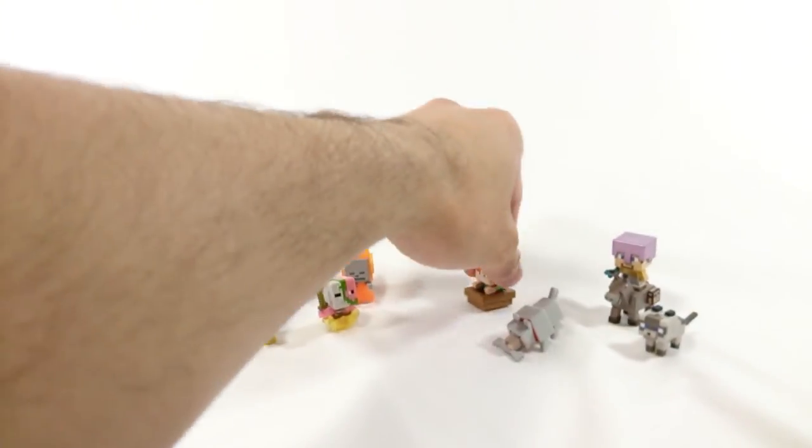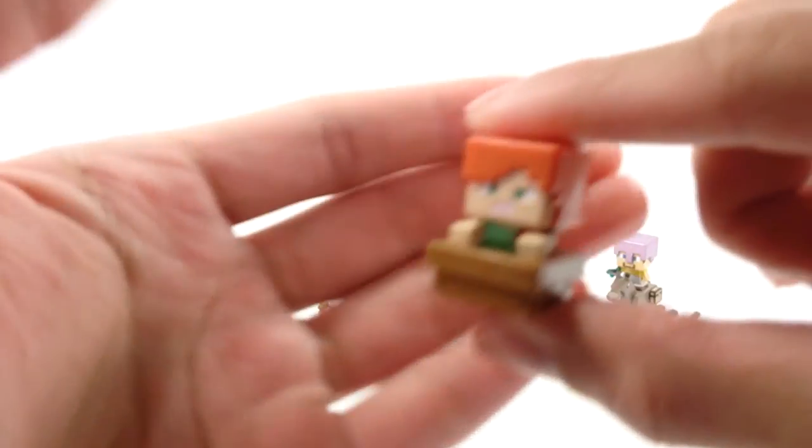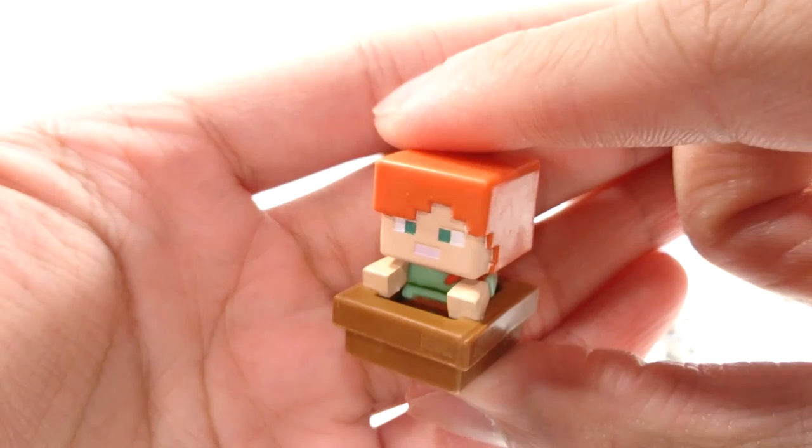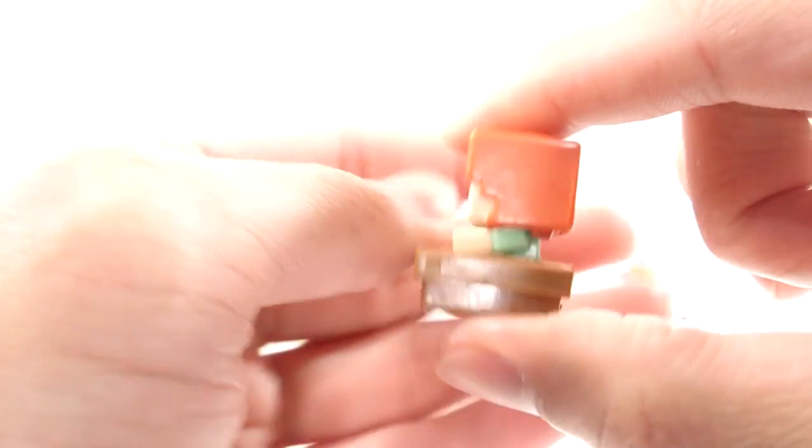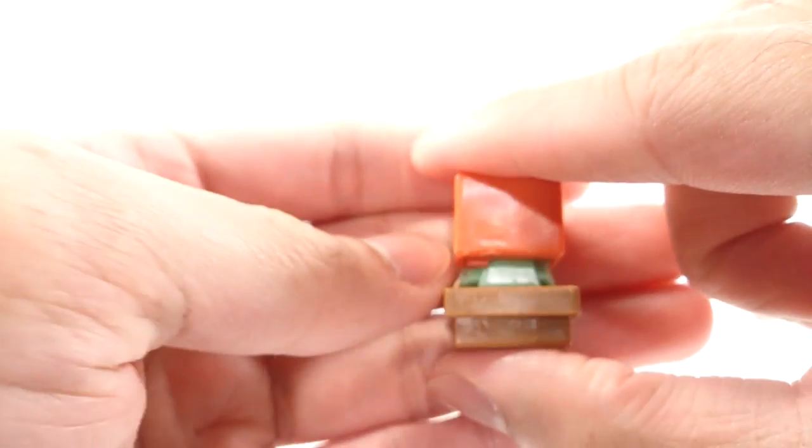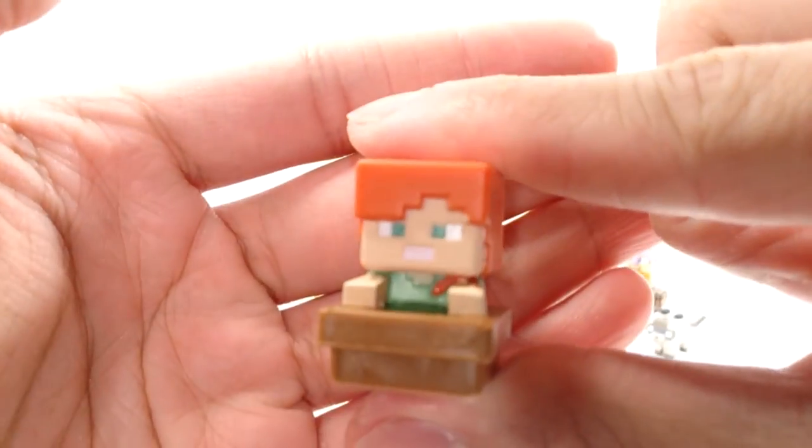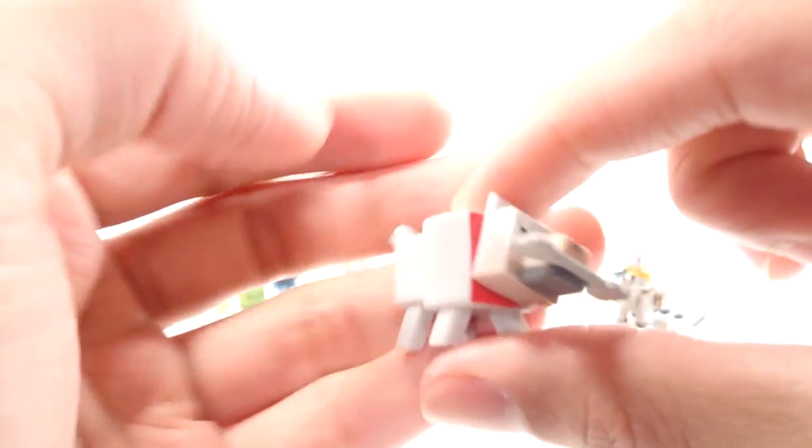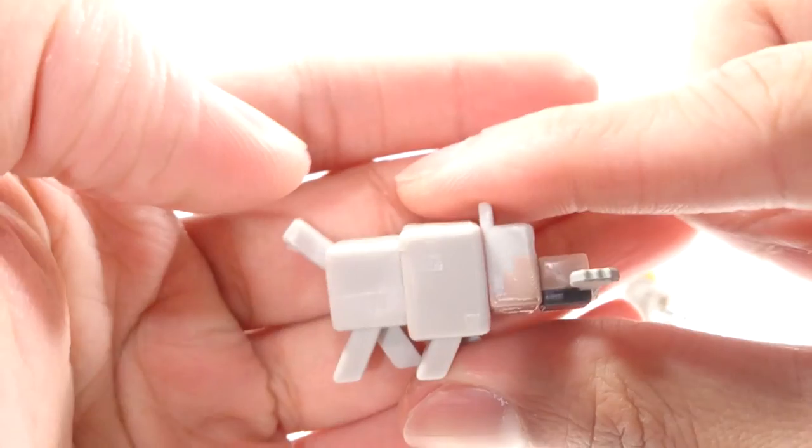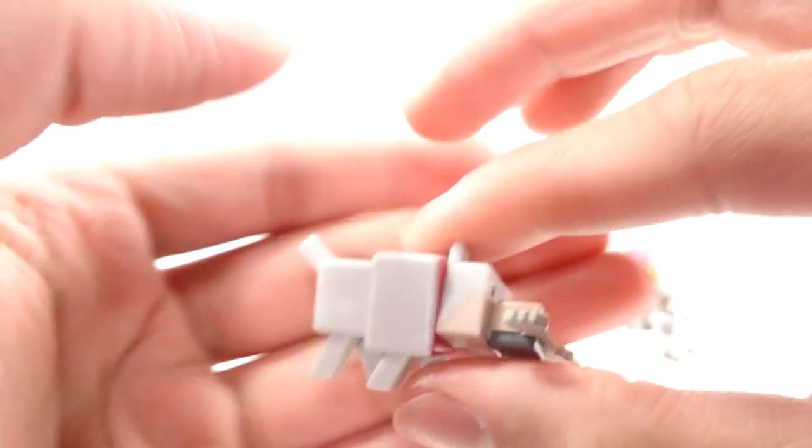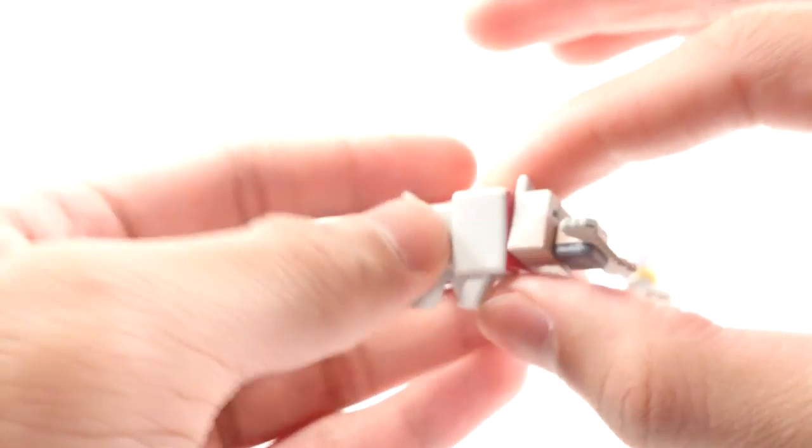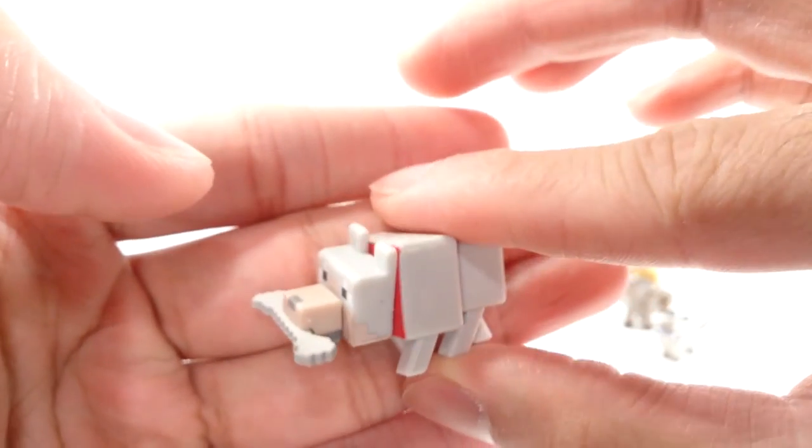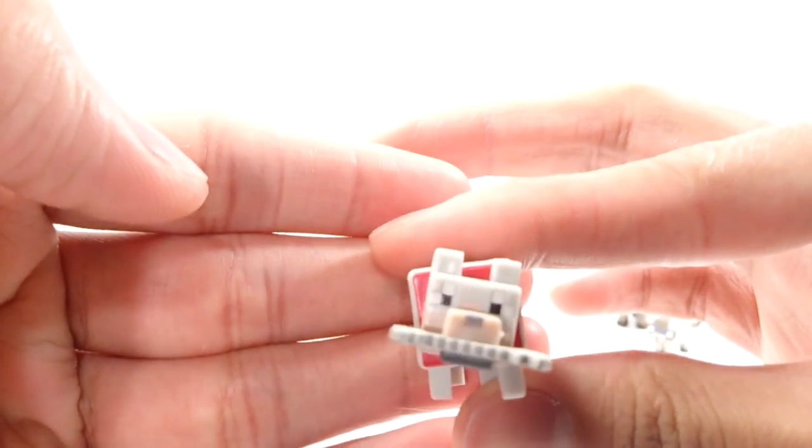Up next we have Alex on a boat. No oars or anything. Just a boat. So. Pretty simple. Here we have Wolf with the bone. It's having difficulty standing up. But then again I have it on a cloth. Maybe on a completely flat surface would be fine. But that one looks nice.